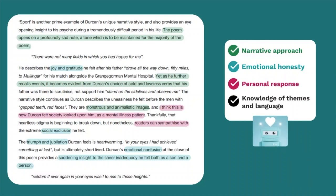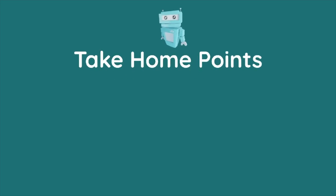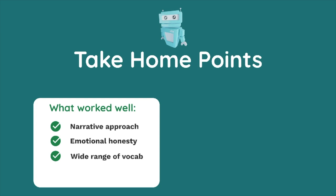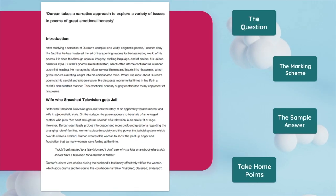Now let's reinforce some of this video's take-home points. Overall I was very impressed with this Paul Durkin essay. What worked well was that the student convincingly and comprehensively addressed the question's two tasks throughout, with a consistent link between Durkin's narrative approach and his ability to explore a variety of issues with great emotional honesty. The student also showcased a wide range of vocabulary, and I loved how they structured the essay by allocating one main body paragraph to each poem studied. Going forward, I'd advise the student to include even more personal response and to be more realistic with the number of quotes used per paragraph. Hopefully some of the content of this video has helped you — make sure you check out the annotated version of the sample answer for even more tips. Thanks for watching and chat again soon.